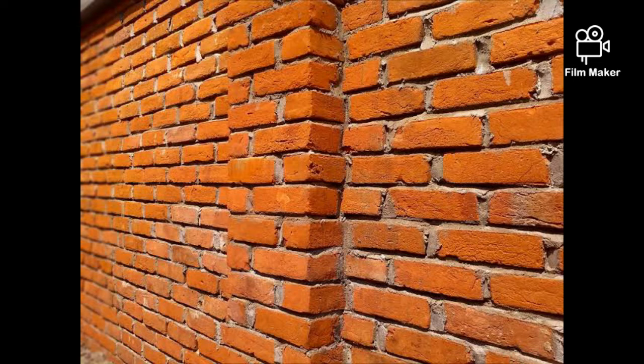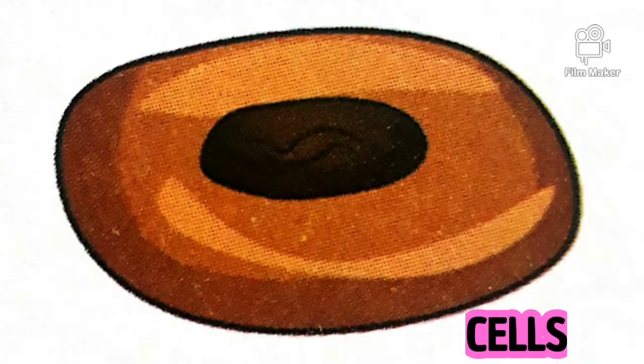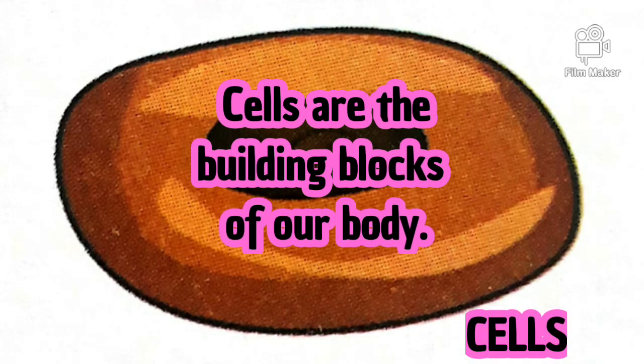You all must have seen a building. How is a building made? It is made up of bricks. In the same way, our body is made up of cells. Cells are the building blocks of our body. These cells join together to form complex organs and organ systems.